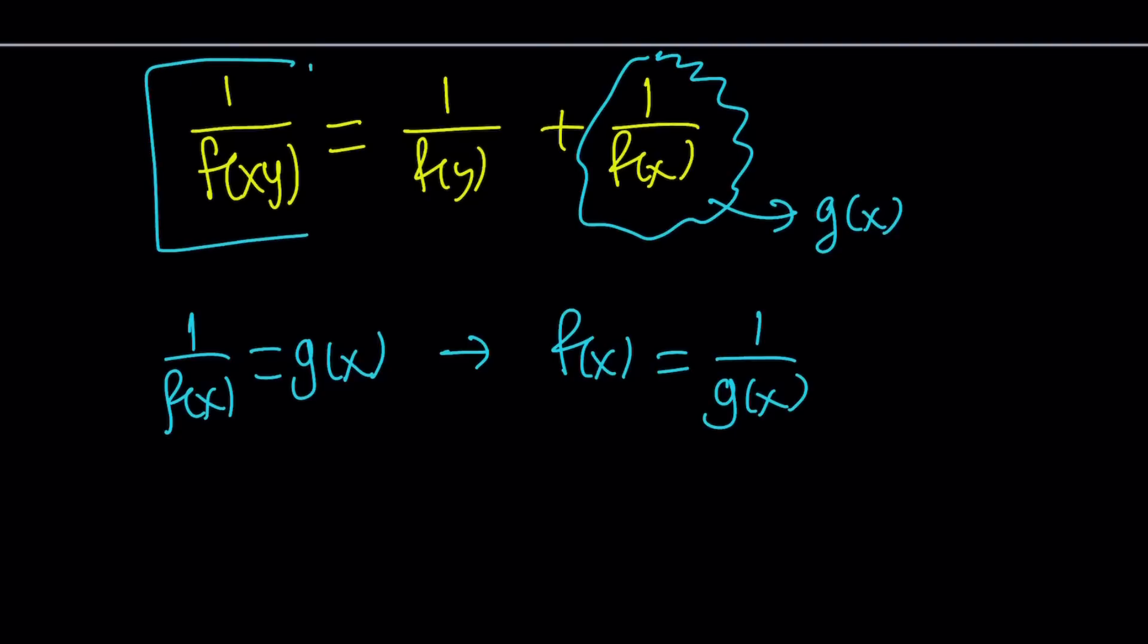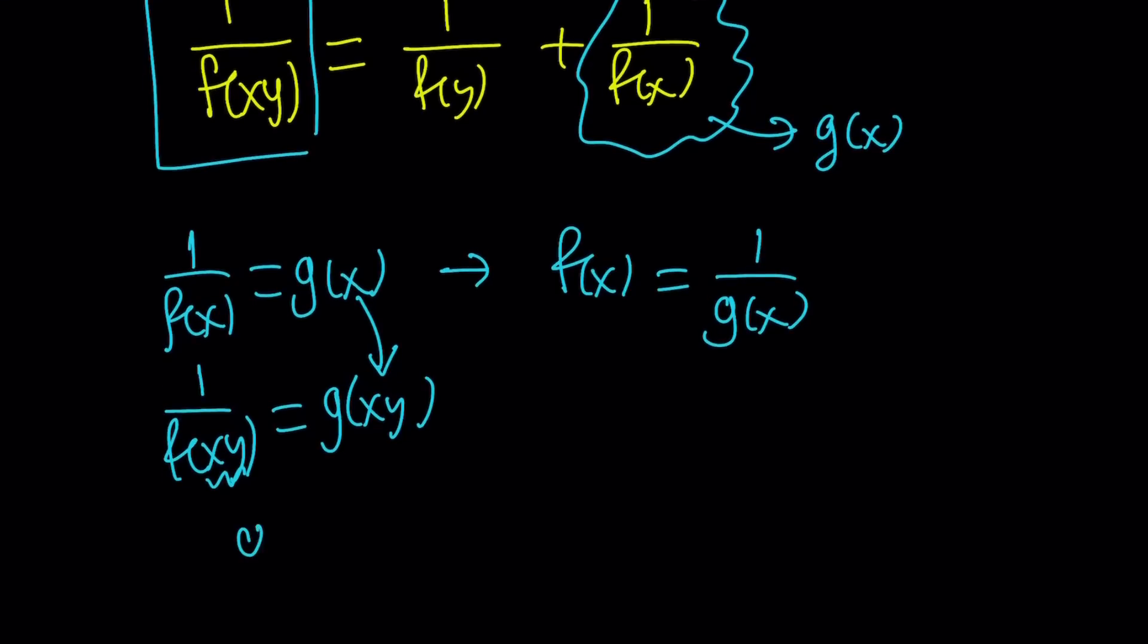So we can kind of now replace this with 1 over g of xy because 1 over f of xy by definition is going to be g of xy. Why? Because you're basically replacing x with xy, and that's what you get. So we can now replace 1 over f of xy with g of xy, and 1 over f of y with g of y, and 1 over f of x already is g of x. Great.